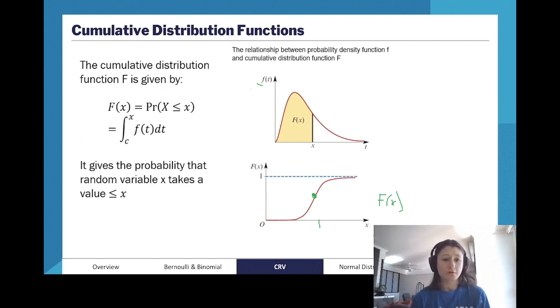So to find a CDF from a PDF, what you need to do is you need to find the definite integral, and this is a little bit confusing, you need to find the definite integral of the PDF, with the lowest domain value, so here C would be zero, with X as the upper limit.